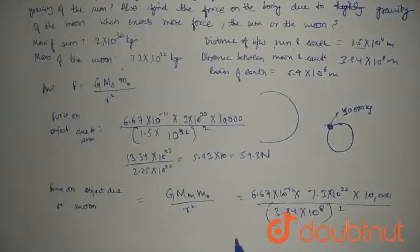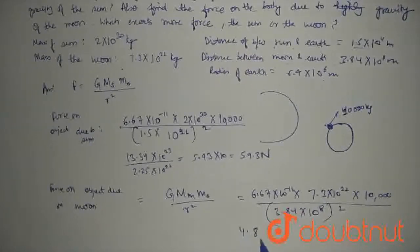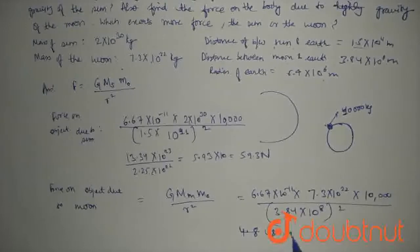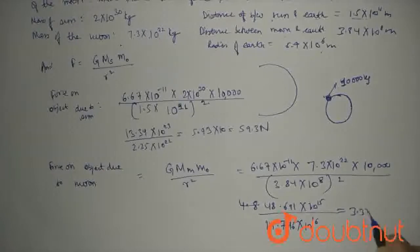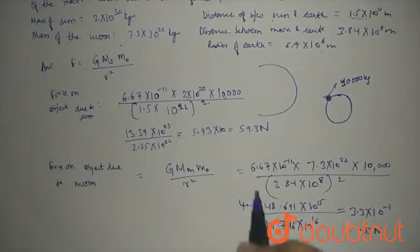The answer will be 48.691 times 10 to the power 15 divided by 14.746 times 10 to the power 16, which is 3.3 times 10 to the power minus 1, or 0.33 newtons.